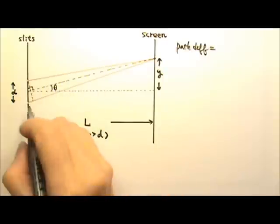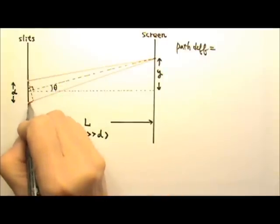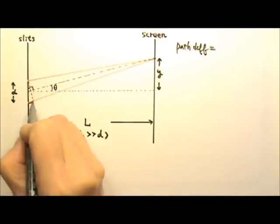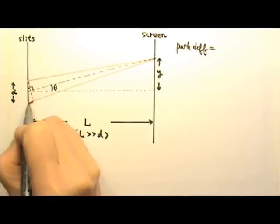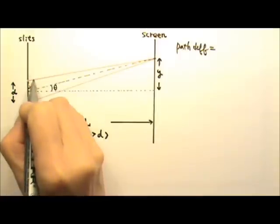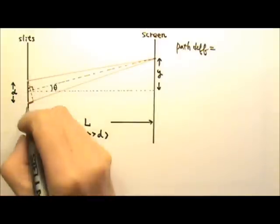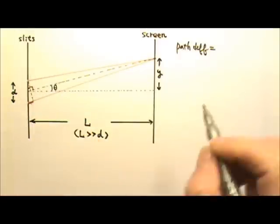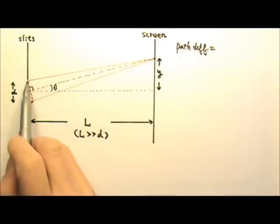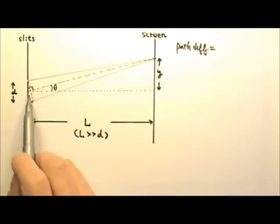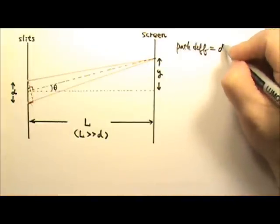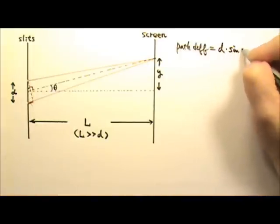Therefore the path difference, which is this distance right over here, this is the extra distance this light ray has to travel compared to that light ray. This is the path difference. And the path difference will be the hypotenuse D times sine theta. Because this side is opposite to the angle. So the path difference is D times sine theta.